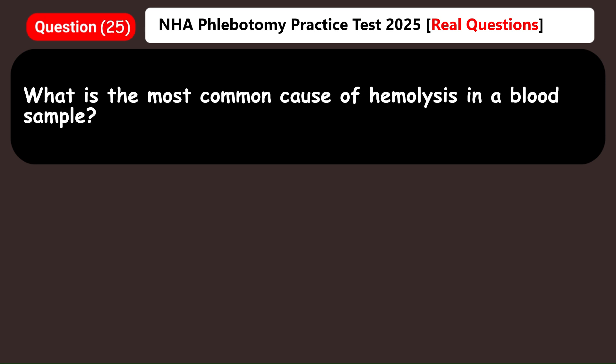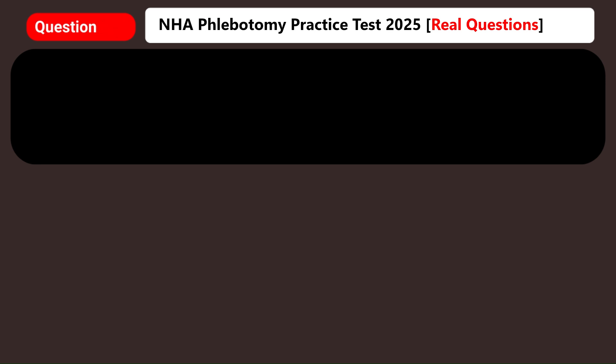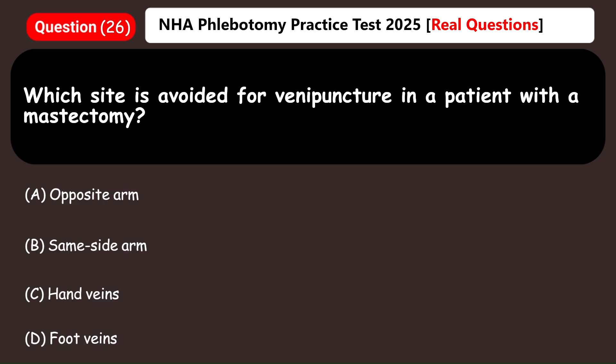What is the most common cause of hemolysis in a blood sample? A) Using a large needle, B) Incorrect order of draw, C) Shaking the tube vigorously, D) Drawing blood too slowly. Answer: C) Shaking the tube vigorously.